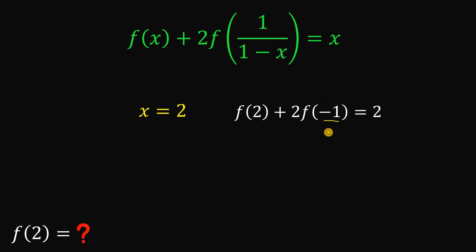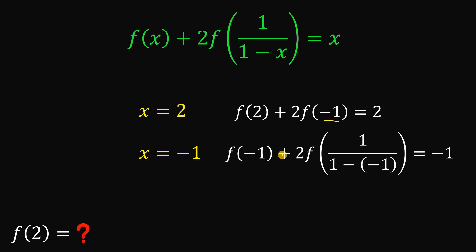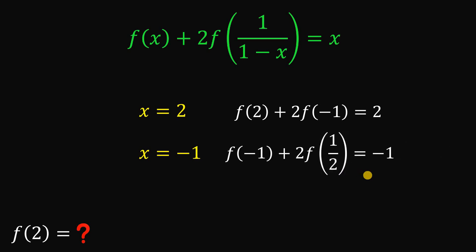Next, let x be equal to negative 1. If we do that, we have f of negative 1 plus 2 times f of 1 over 1 minus negative 1 equals negative 1, because we replace all x with negative 1. Simplifying, 1 minus negative 1 is 2, giving 1 over 2 on the denominator. So we have f of negative 1 plus 2 times f of 1 over 2 equals negative 1.